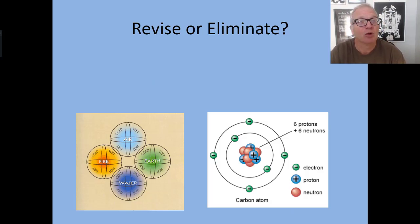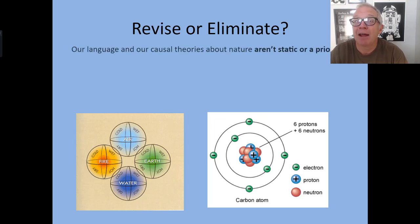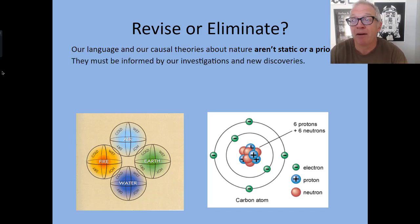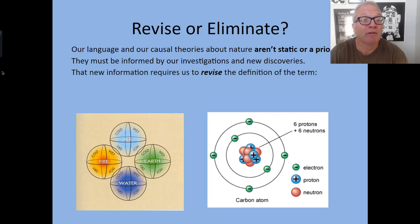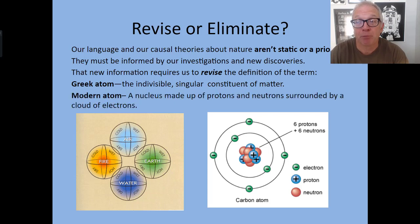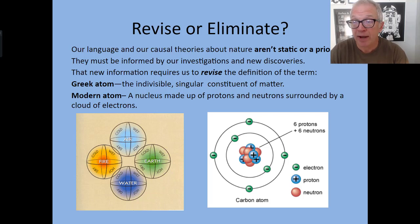The question then is: do we revise or do we eliminate in the face of discovery? Our language and our causal theories about nature shouldn't be static or a priori. New information requires us to revise the definition of the term. The Greek atom was an indivisible, singular constituent part of matter. But a modern atom is a nucleus made up of protons and neutrons surrounded by a cloud of electrons — they have parts. Modern atoms have parts, despite the definition problem that would have on a Greek account. So we still use the term but have radically different worldviews to explain what they are.